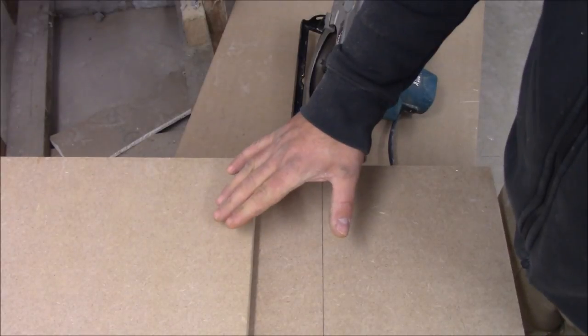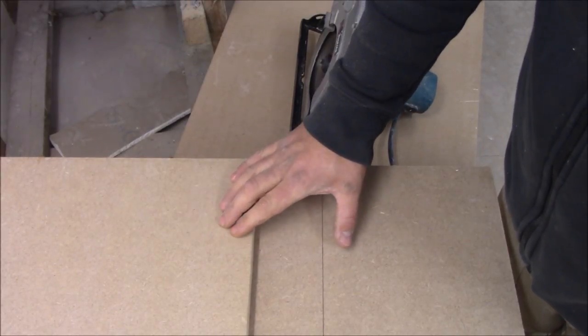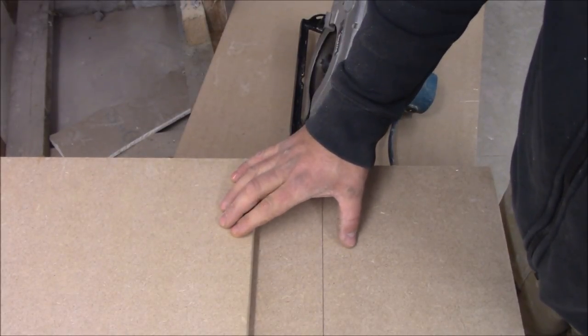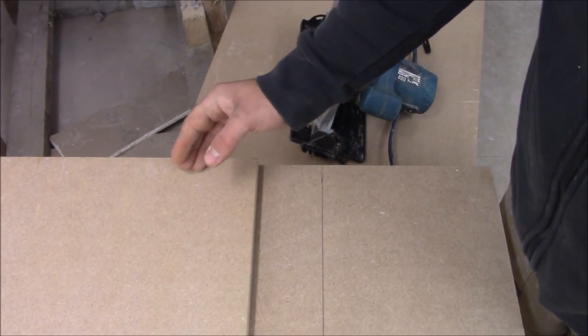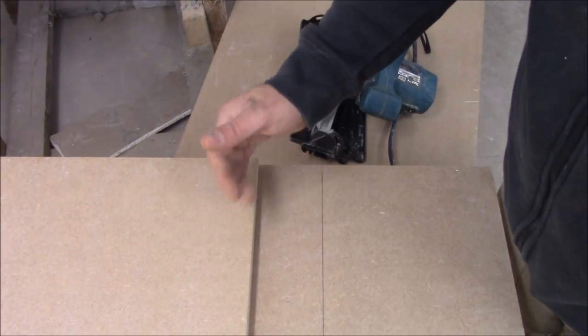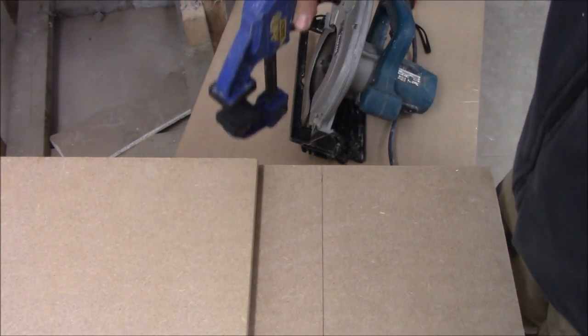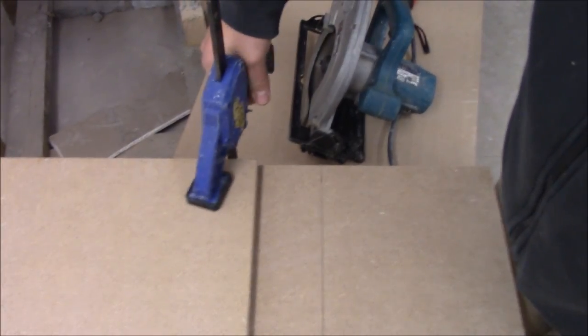So to cut it straight I need something that will support my saw on one side, keep it in line. So I'm going to use another MDF board which is long enough because I'm going to cut the full length. And obviously I need to secure it with clamps.